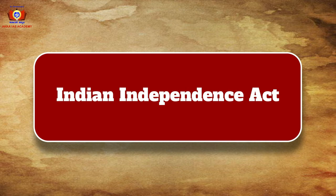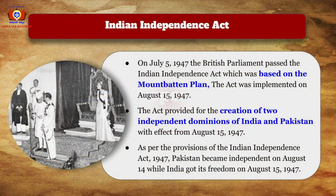On July 5, 1947, the British Parliament passed the Indian Independence Act, based on the Mountbatten Plan, to be implemented on August 15, 1947. The act provided for the creation of two independent dominions of India and Pakistan. As per the act, Pakistan became independent on August 14, while India got its independence on August 15, 1947.